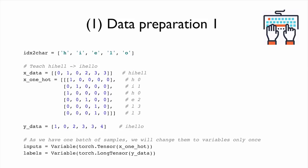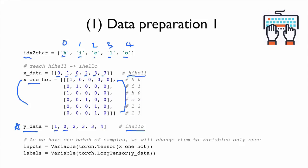In the source code, we first make an index for unique letters h, i, e, l, o — corresponding to 0, 1, 2, 3, 4. We express x_data (h-i-h-e-l) as indices [0, 1, 0, 2, 3] and convert to one-hot. The y_data labels are [i-h-e-l-o] — for given 'h', predict 'i'; for given 'i', predict 'h', and so on. We express these labels using their IDs.